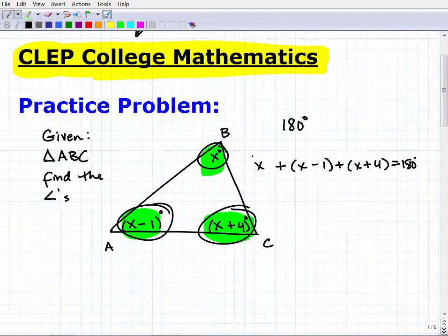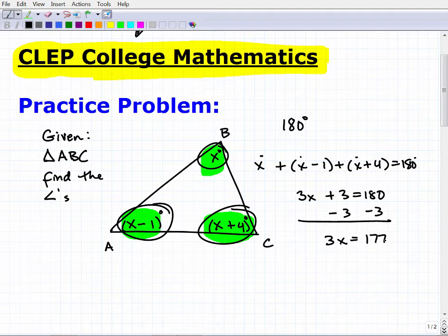So let's continue this solution. So we have X plus X plus X. So this is going to be three X. I have negative one plus four. So this is plus three is equal to 180. Okay. So at this point, I'm going to go ahead and subtract three from both sides of the equation and I get three X is equal to 177.